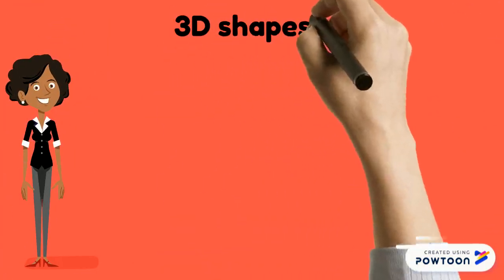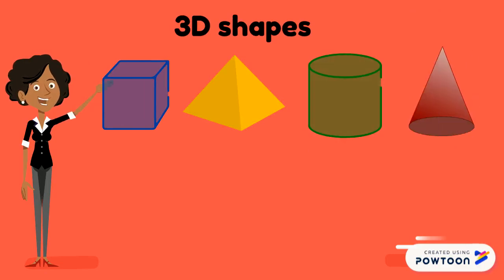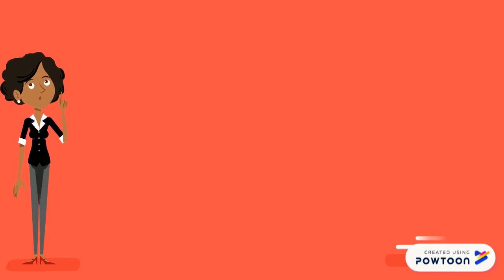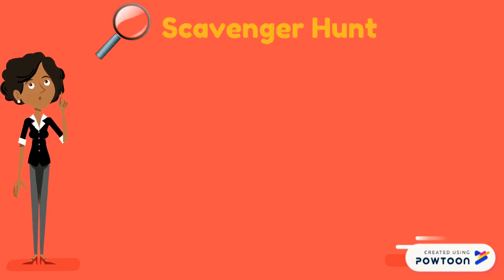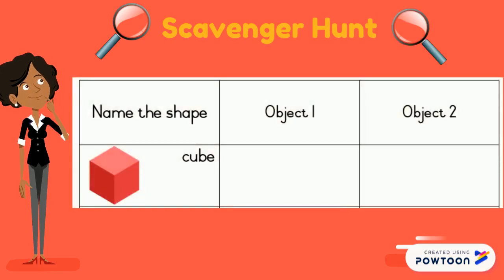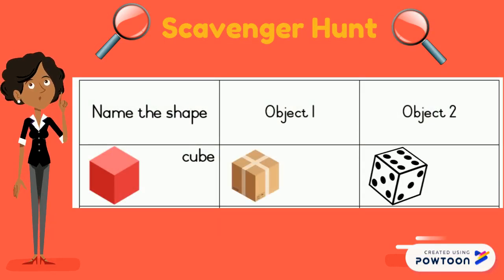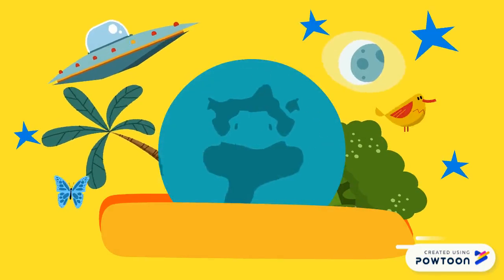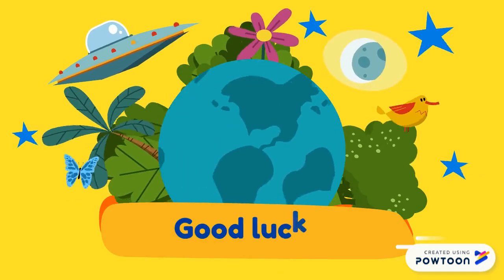We had a look at a lot of different 3D shapes. Now we have a bit of a fun challenge for you. You are going to go on a 3D scavenger hunt. You are going to walk around your house and find two objects that are the same shape as your 3D shape. For example, if we look at the cube, I could find a box and a dice. You can either draw a picture or write the word. Well done gentlemen! Now you can go off and have some fun. Good luck!